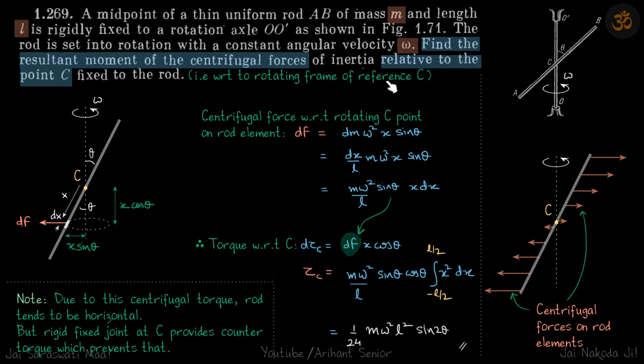Some people think that because point C lies on this axis, point C can be a ground reference frame. That is not the case. Point C is on the rod, fixed to the rod. Therefore, what we need to calculate is the net torque of centrifugal forces with respect to rotating frame of reference C.